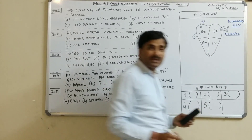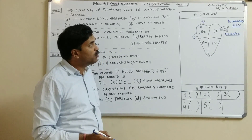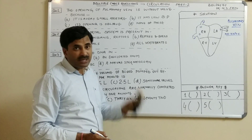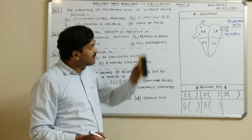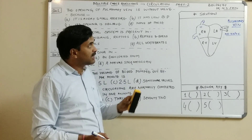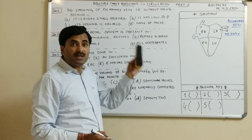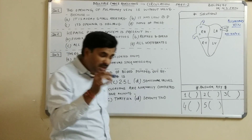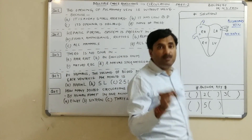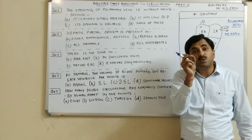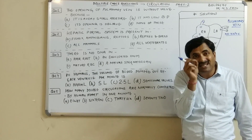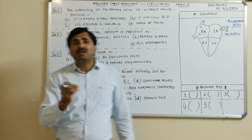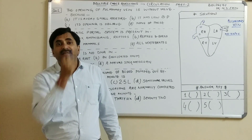The question arises: if there is no valve at the opening of the pulmonary vein, why doesn't blood flow back into it? The blood pours into the left atrium but never goes back into the pulmonary vein. This is because the opening of the pulmonary vein is obliquely placed, which prevents the backflow of blood.